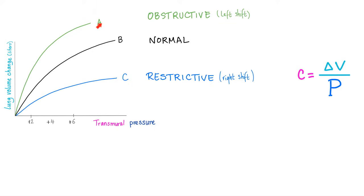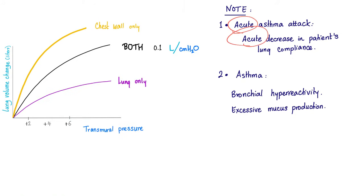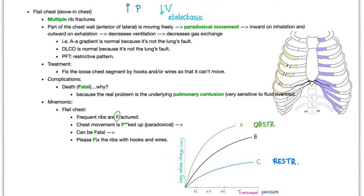Obstructive lung disease shifts the compliance curve to the left; restrictive shifts it to the right. Acute asthma will acutely decrease the patient's lung compliance — there's no expansibility. Asthma is defined as bronchial hyperreactivity and excessive mucus secretion. The lung alone tends to collapse; the chest wall alone tends to expand. Together in a normal person, compliance is 0.1 L/cmH₂O.